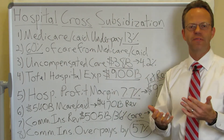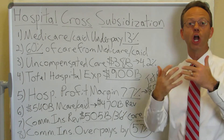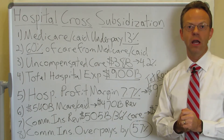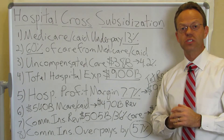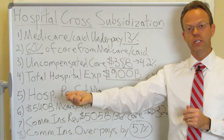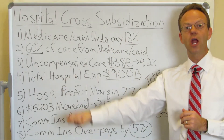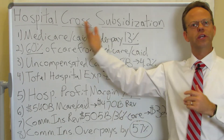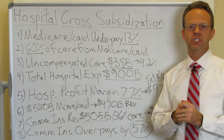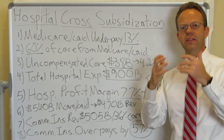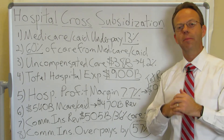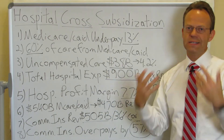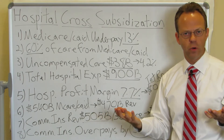It's a well known fact that Medicare and Medicaid under reimburse hospital systems for the care they provide, and that hospital systems then have commercial insurance patients overpay for the care that they provide to them. So that's where you get the cross subsidization from — you're subsidizing the underpayment by Medicare and Medicaid by having commercial insurance overpay. That's just how hospital finance in America works.